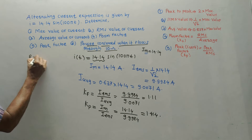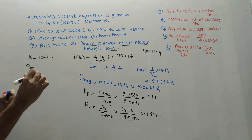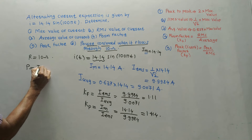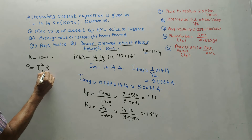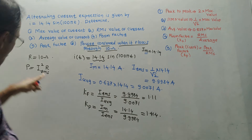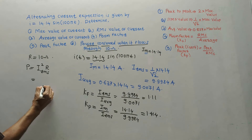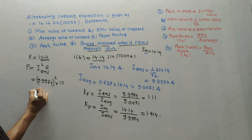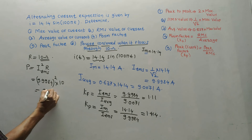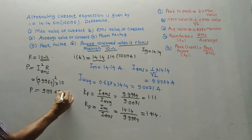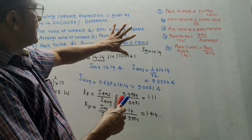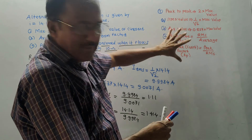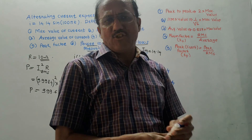The power formula is P = I_rms² × R. Substituting: P = (9.9984)² × 10 = 999.68 W. The unit of power is watts. I have covered all the types of variations that can be asked related to AC fundamental quantities. Memorize these formulas and you can attempt any such numerical. That's it for today's session — thank you very much.